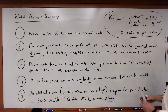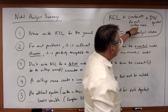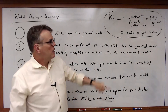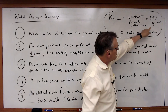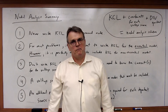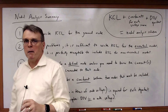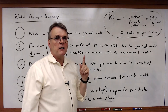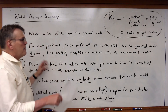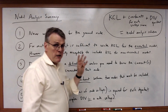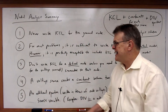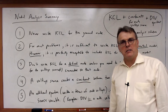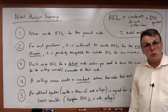Any time I see students say they're not getting an answer or can't solve it, almost always they have forgotten either a dependent source variable equation or a constraint equation. They can write the KCL properly but forget the others. You've got to remember: KCL plus constraint plus DSV. Beyond that, what you need more than anything else to do well in nodal analysis is practice. Learn the technique until it's second nature and it will serve you well in the rest of this course.